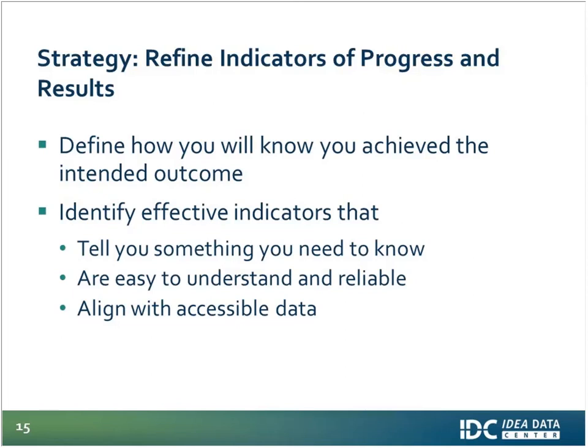An effective indicator is easy to understand and reliable. Your stakeholders should be able to read an indicator and know what specific change is being observed or measured and how progress toward that intended outcome is defined. Effective indicators should also be aligned with accessible data — a well-worded indicator helps you select the right measure or data source to capture the evidence you need. It clarifies the type and level of evidence required. In some cases, states have had an indicator with no existing data to support it, requiring either new data collection or refinement of the indicator to align with more readily available data.